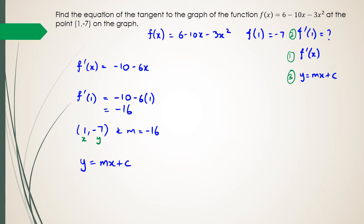So, y is equal to 7, m is equal to minus 16, x is equal to 1. And c is what we're trying to figure out. So, we've got 7 equals negative 16 plus c.